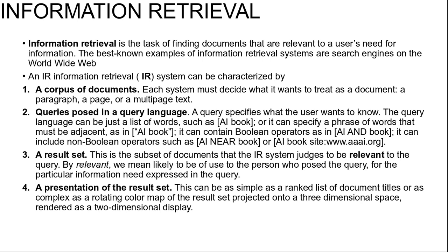A query can contain Boolean operations such as 'AI and book', and it can include non-Boolean operations such as 'AI near book' or 'AI book site www.aaai.org'. Third, a result set — the subset of documents that the IR system judges to be relevant to the query. By relevant, we mean likely to be of use to the person who posed the query. And fourth, a presentation of the result set, which can be as simple as a ranked list of document titles or as complex as a rotating color map projected onto a three-dimensional space rendered as a two-dimensional display.